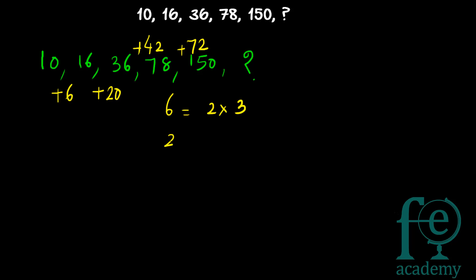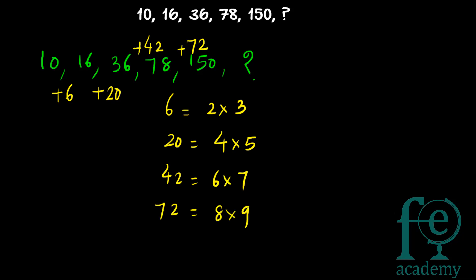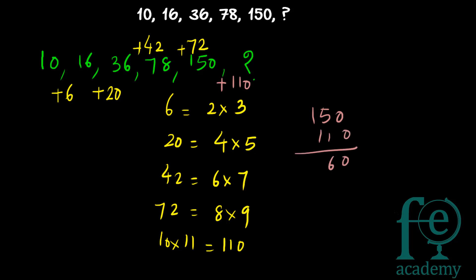6 equals 2×3, 20 equals 4×5, 42 equals 6×7, and 72 equals 8×9. So the next difference will be 10×11, which equals 110. So 110 should be your next number to be added.